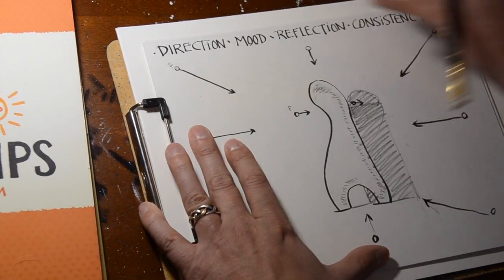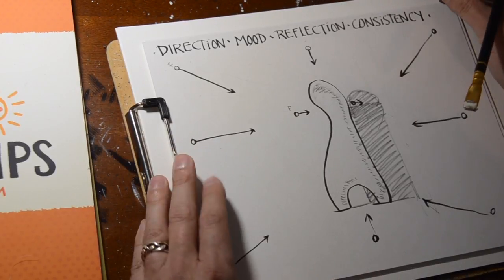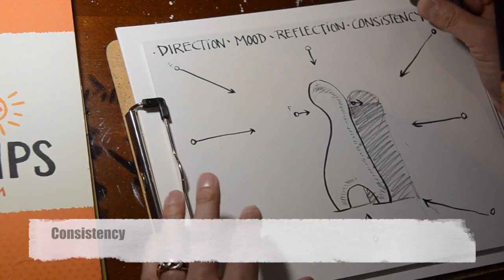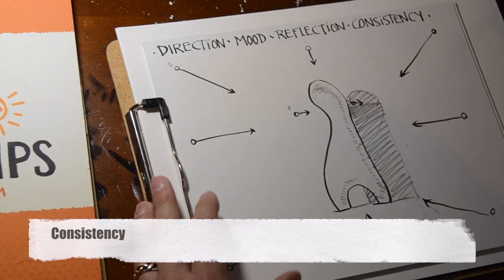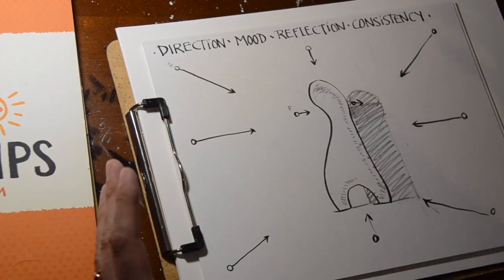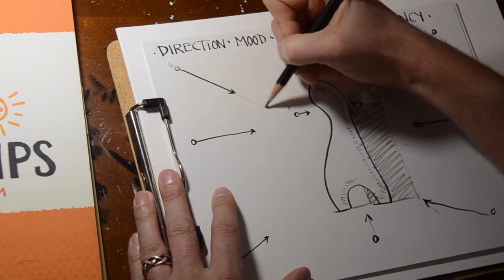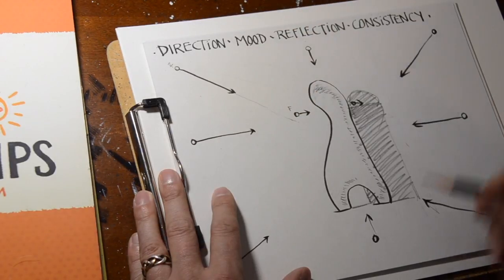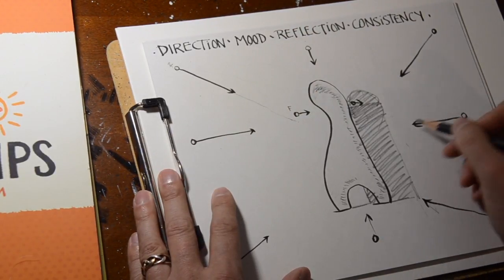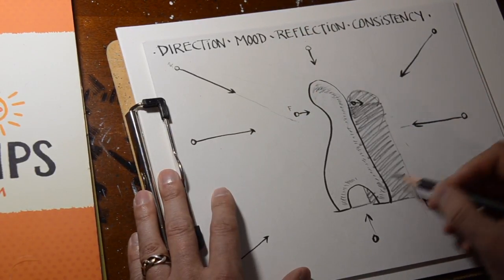Alright. So, that's direction. We talked about mood. We talked about reflection. Now, what you want to make sure is that you're doing this fairly consistently. If I'm always drawing, if my shadow is coming from this direction, yes, I can deal with reflective lighting.